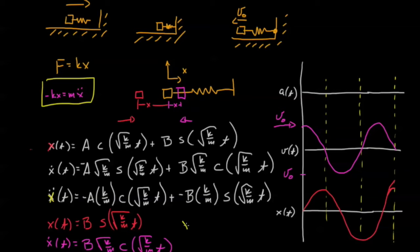Finally, we can take a look at the acceleration. In yellow, we see that it's negative b times k over m times sine of square root k over mt. Alright, so let's graph that and take a look at what we see. It's going to be a negative sine wave.